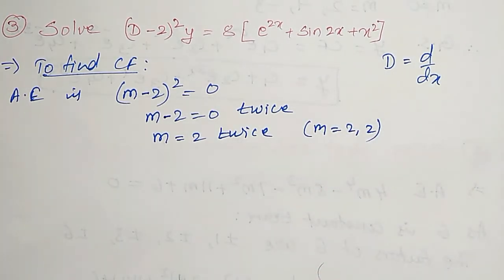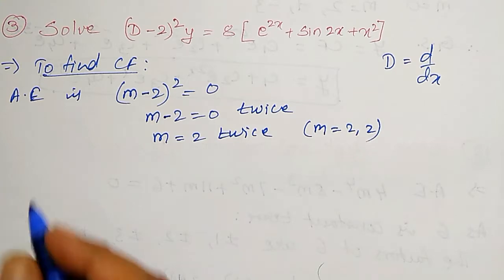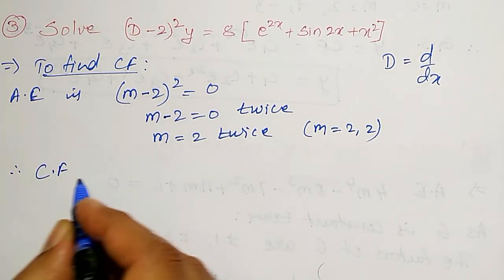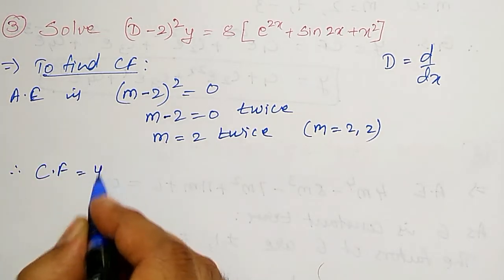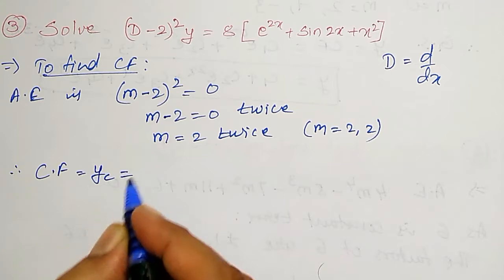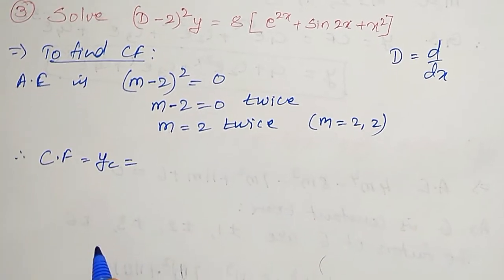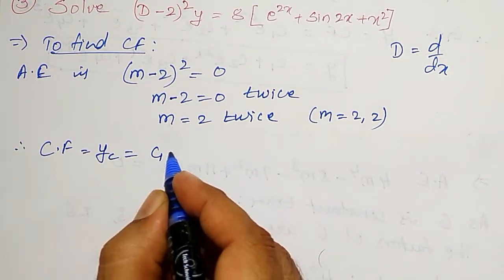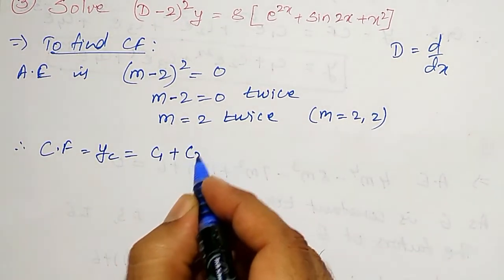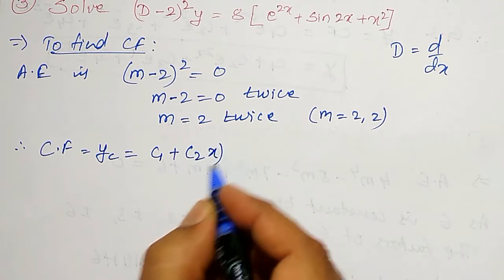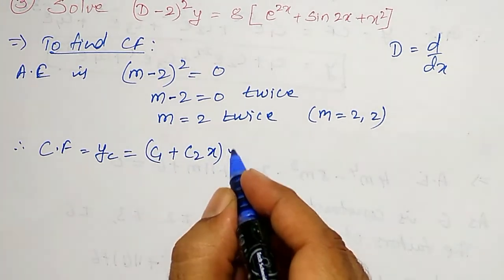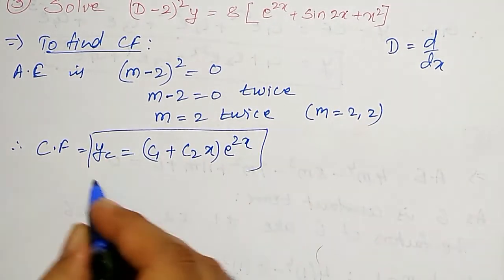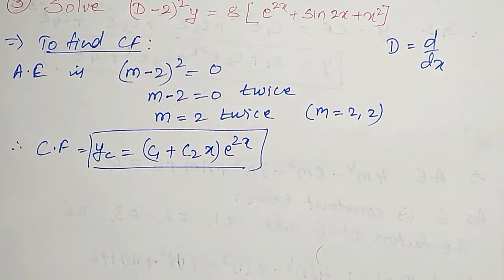If the repeated roots are there, then the CF is given by: CF equal to YC equal to (C1 plus C2·x) into e to the power 2x.